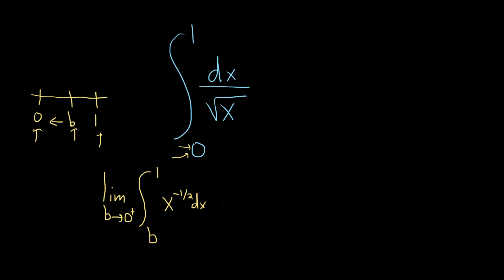Now let's go ahead and integrate this. This is the limit as b approaches zero from the right. When we integrate here, we use the power rule. So we just add one and divide. So negative one-half plus one-half is one-half. So we have x to the one-half. And we're dividing by one-half. So we're really multiplying by the reciprocal, which is two. And we're going from b to one.